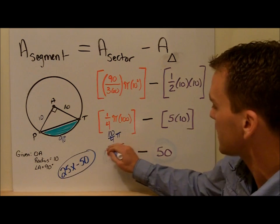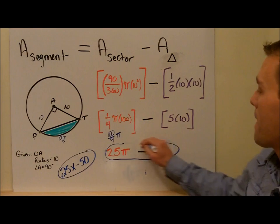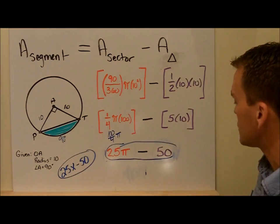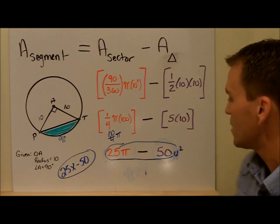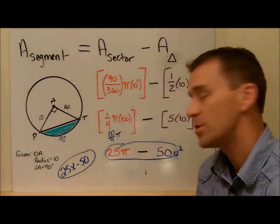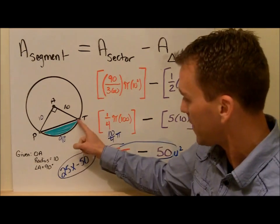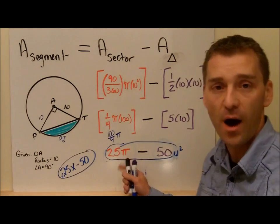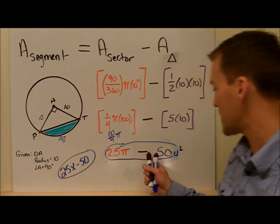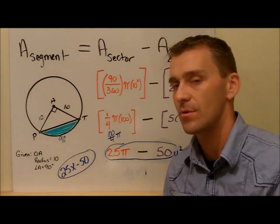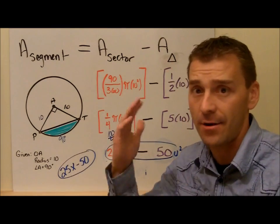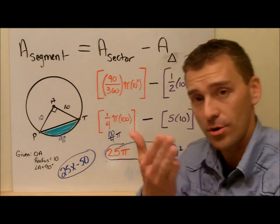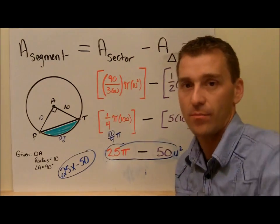So the answer is 25π minus 50 units squared — that is the area of that segment. Now if it asks you to compute to the nearest tenth, you can do 25 times π to get the decimal equivalent and then subtract 50. But most times in this section, and in trig, and calculus, and beyond, it's going to tell you to keep your answer in terms of pi. Good luck. We'll see you in class and we'll practice these.